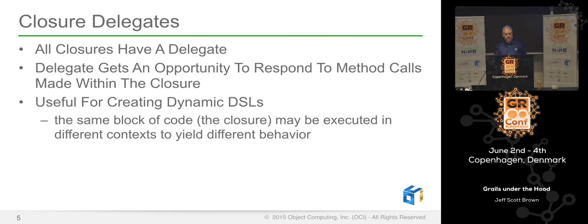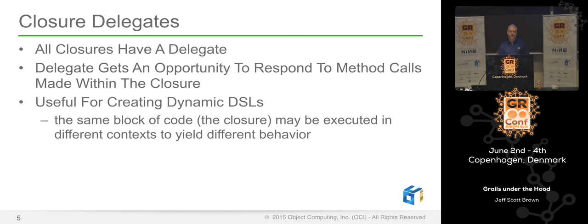First I want to talk about runtime metaprogramming and go through it fairly quickly, because the compile-time stuff is a little more in-depth and there's more to talk about there. I want to quickly demonstrate a couple of things you can do with Groovy's runtime metaprogramming system — specifically closures and their delegates — and then talk about how that relates to how Grails takes advantage of these ideas.